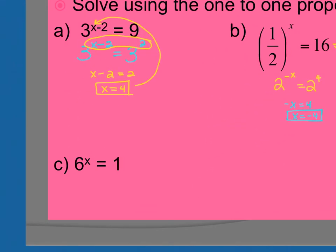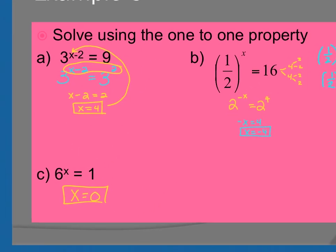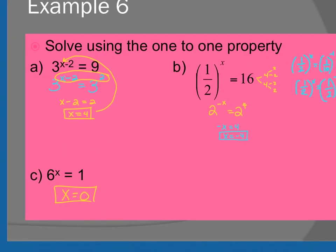And then the last one, 6 to the x equals 1. x is what? Zero. There's no way to figure that out. There's no factor tree you can use to break down. You've got to just have it memorized. Same thing when we get into logs tomorrow. Questions on one-to-one property?